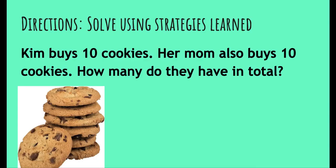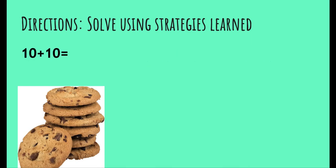So the next one I want you guys to try. Directions: solve using strategies learned. Kim buys 10 cookies. Her mom also buys 10 cookies. How many do they have in total? We are adding — I want to know how many cookies there are in total. If Kim bought 10 and her mom bought 10, we're going to do 10 plus 10. I hope your brains are thinking what I'm thinking, which is doubles.